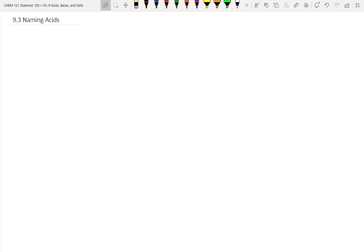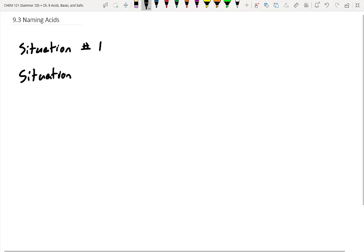In this next section we're going to learn how to name some simple acids. There are two main situations we need to be aware of. So let's break them down. I'll label these situation number one and situation number two for these basic acids.